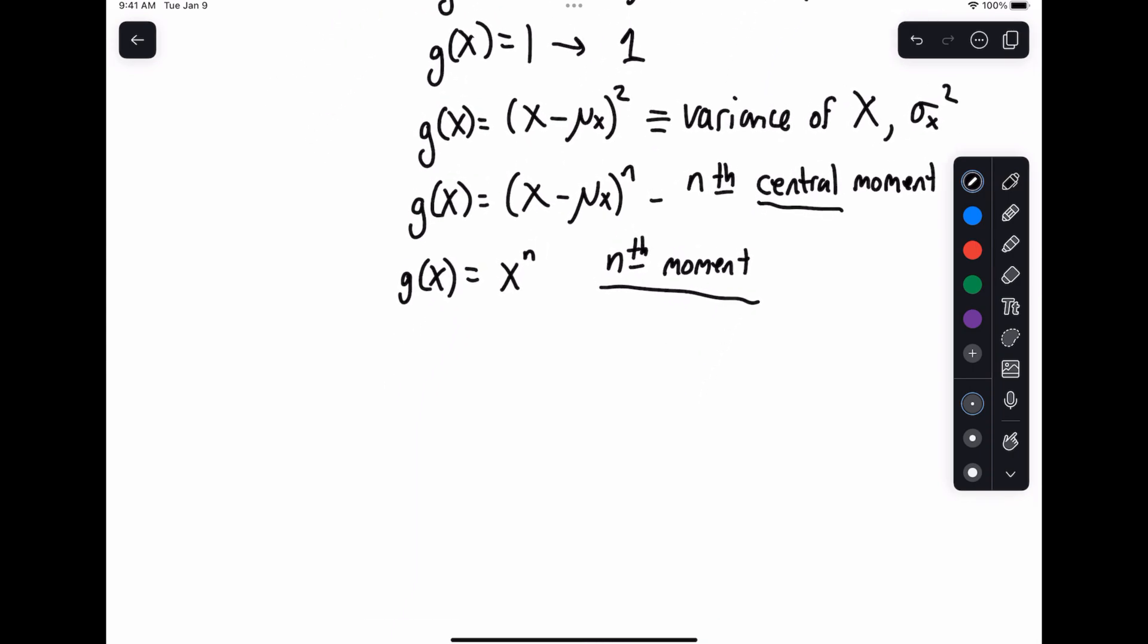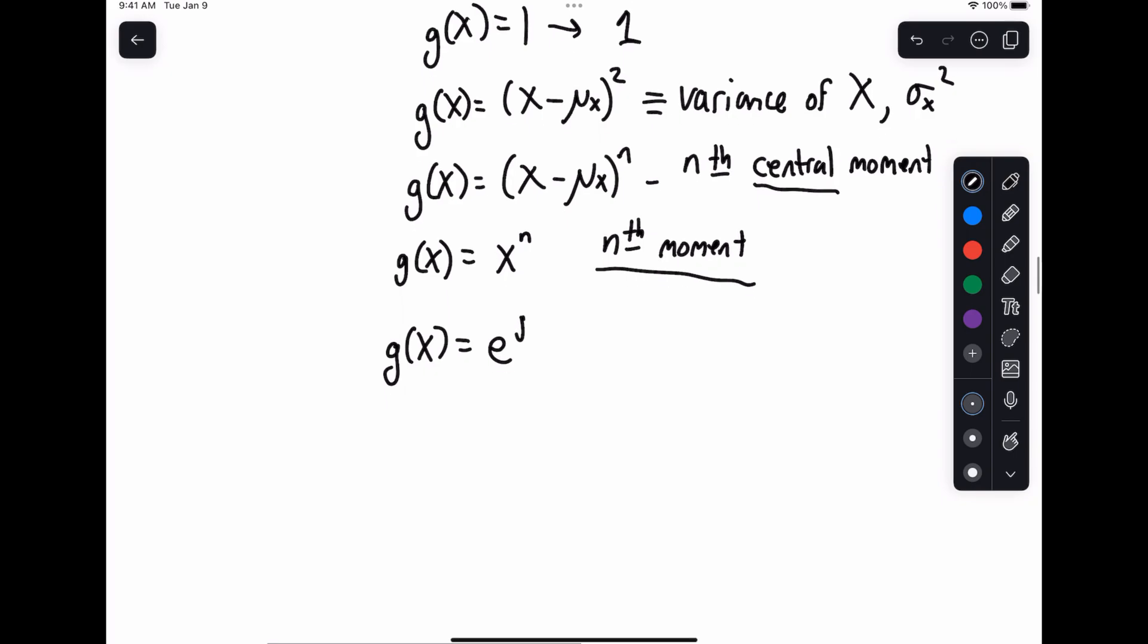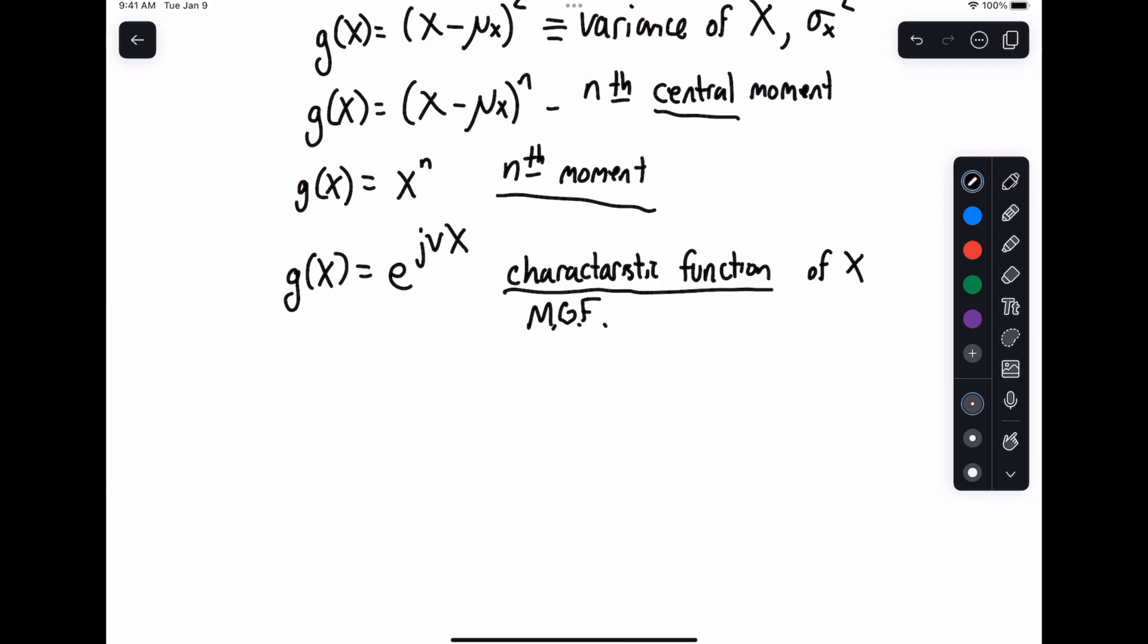And last but not least, perhaps our most important function for g of x is g of x equals e to the j times nu times x. Now, this is an interesting one. What this is called is the characteristic function of x. You often hear it also called the mgf or the moment generating function. That'll come into play in a moment.